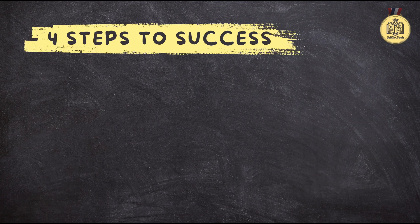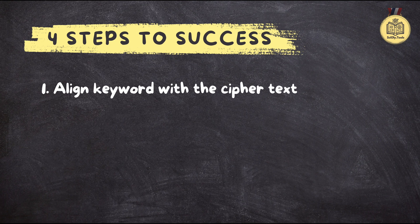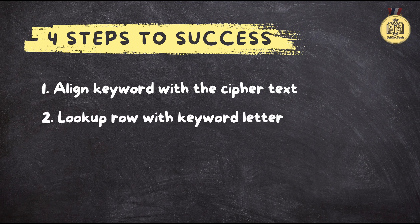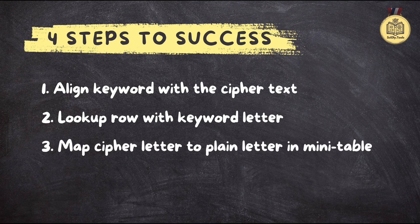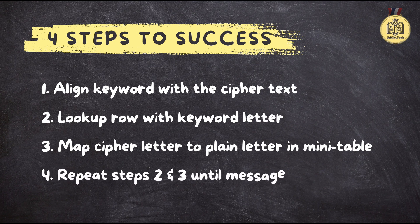Here are the four simple steps to decoding a Porta Cipher. First, we align our keyword with the ciphertext letter by letter. Then we use the keyword letter to find its row in the Porta table, which becomes our mini decoding table — think of each row as a mini codebook specific to that keyword letter. Next, we find the ciphertext letter in that row and look at the column header above it to reveal the plaintext letter. Finally, we repeat the process for each letter pair until the entire message is revealed.